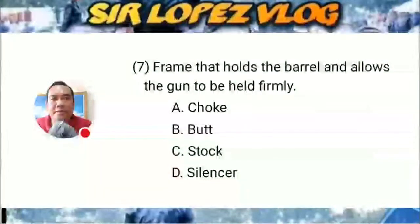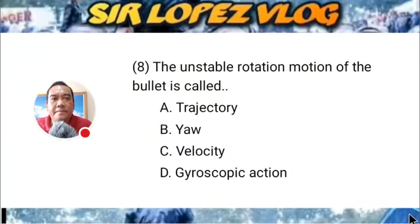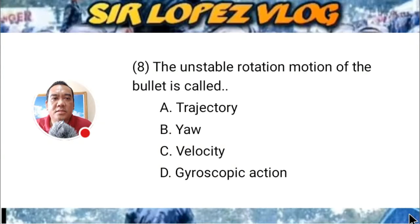Question number eight: The unstable rotation motion of the bullet is called: A) trajectory, B) yaw, C) velocity, or D) gyroscopic action?